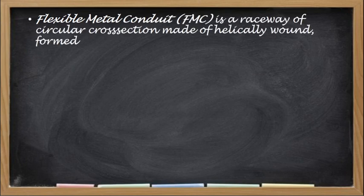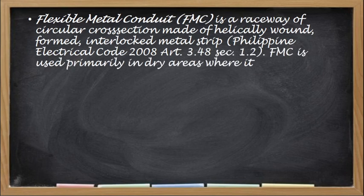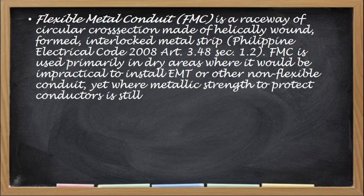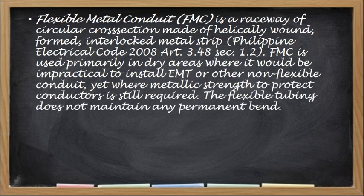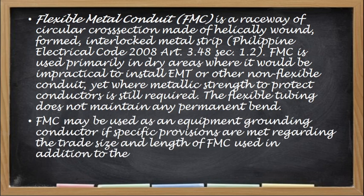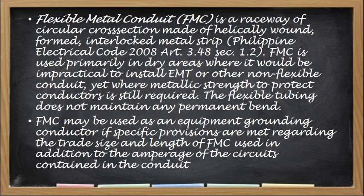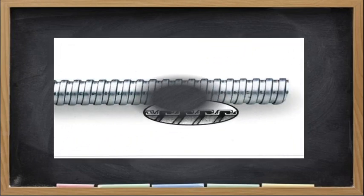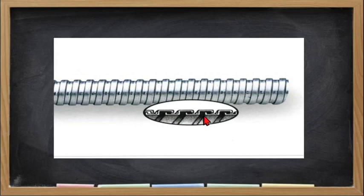One example of a flexible conduit is the Flexible Metal Conduit or FMC. It is a raceway of circular construction made of a helically wound, interlocked metal strip. FMC is used primarily in dry areas where it would be impractical to install EMT or other non-flexible conduit, yet metallic strength to protect conductors is still required. The flexible tubing does not maintain any permanent bend. FMC may be used as an equipment grounding conductor if specific provisions are met regarding the trade size and length of FMC, in addition to the amperage of the circuits contained in the conduit. As seen in the photo, the interlocking helical structure is what makes FMC both somewhat rigid and flexible at the same time.